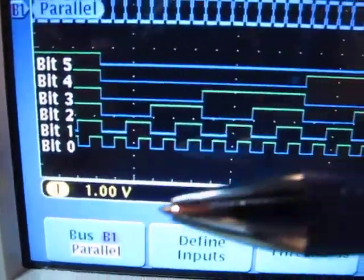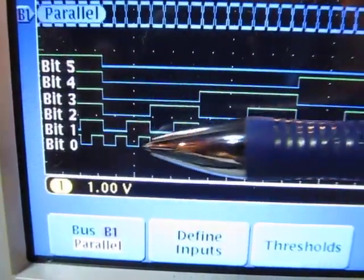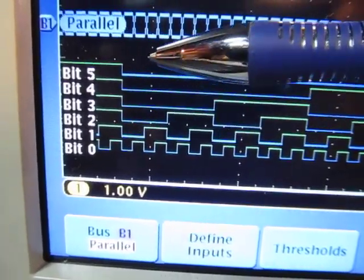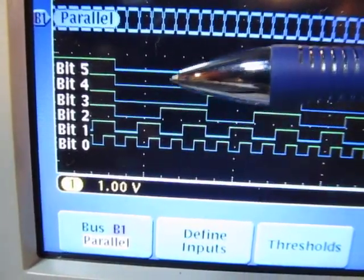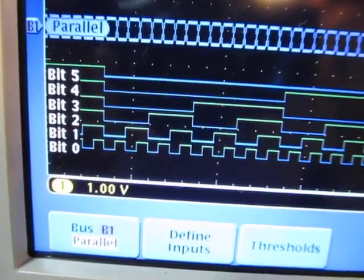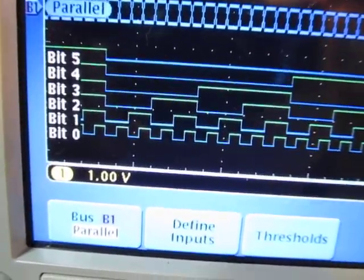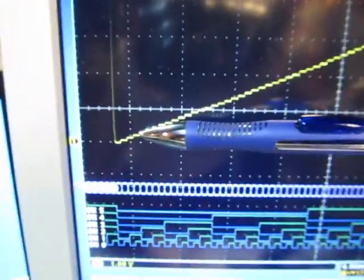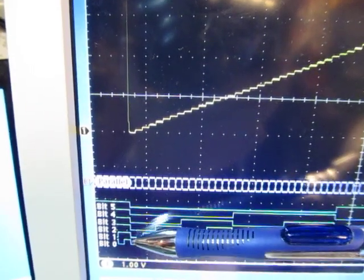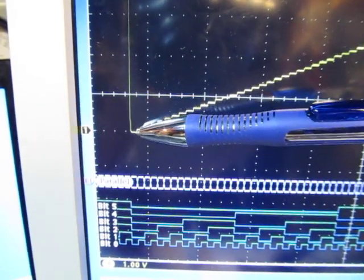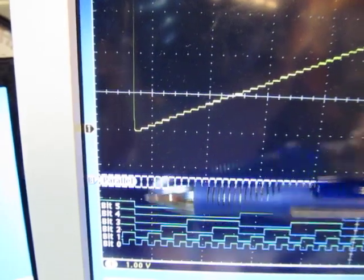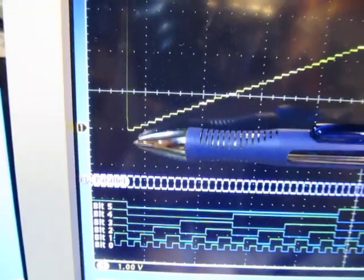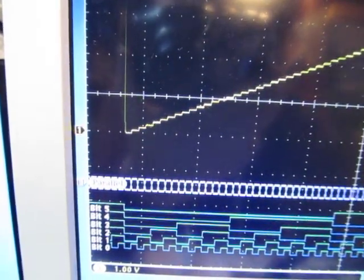And if we look on the mixed signal scope, here's the values of the 6-bits. So we can see bit 0 kind of toggling quick, and then every other transition we get bit 1 toggling, bit 2, bit 3, bit 4, bit 5. So there's my 6-bits for the parallel word that's going into the R2R ladder. And if we look kind of correspondingly, this is the analog voltage that is corresponding to that. So when they were all zeros, we're down at the lowest value here. And then this first bit goes 1, we get the first step, then that bit goes low, we get the next bit that goes 1, and we're just doing a binary count, and we can actually see the stair step going across.